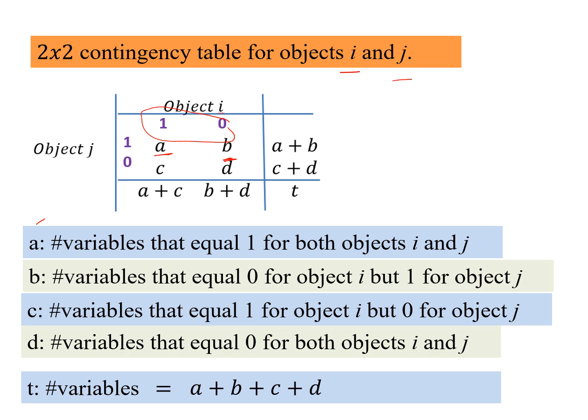C is the number of variables that equal 1 for object i but 0 for j, and d where variables equals 0 for both objects i and j, and total number of variables is a plus b plus c plus d.